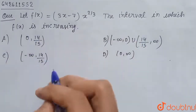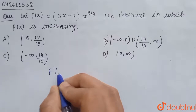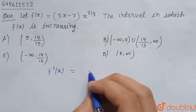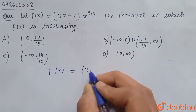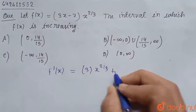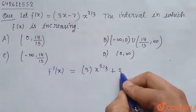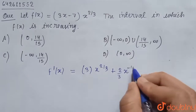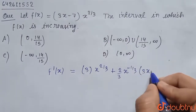For this, first of all differentiate f(x) using the product rule. This gives us: differentiation of the first part (3x - 7)^7, written with the second part x^(2/3) as it is, plus the differentiation of the second part, which gives 2/3 · x^(-1/3), with the first part as it is.